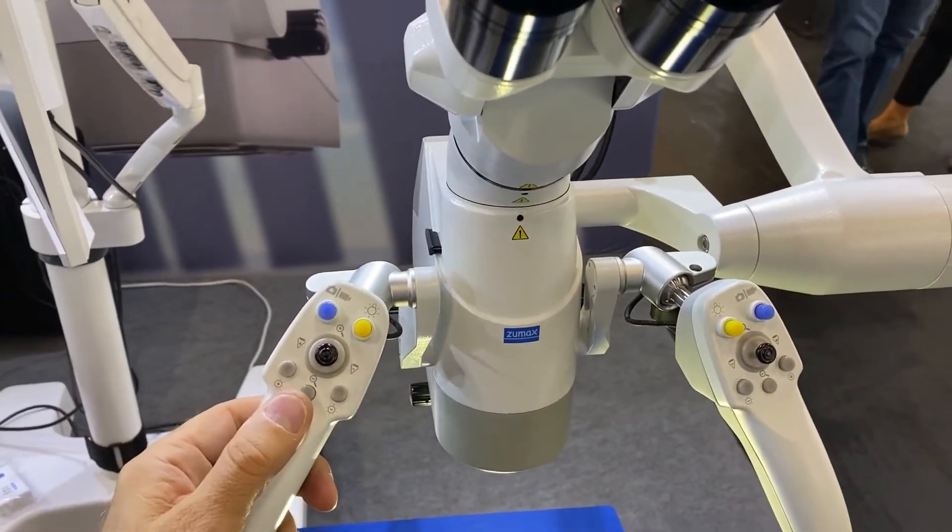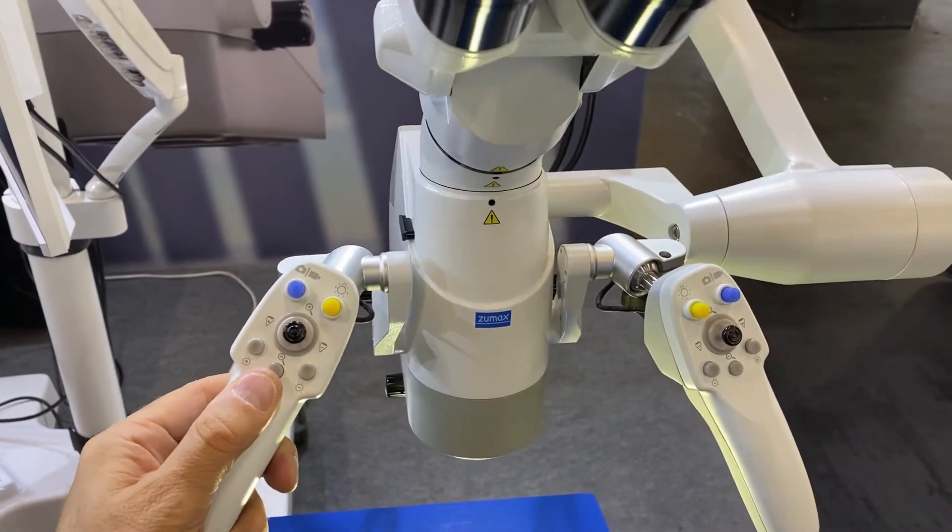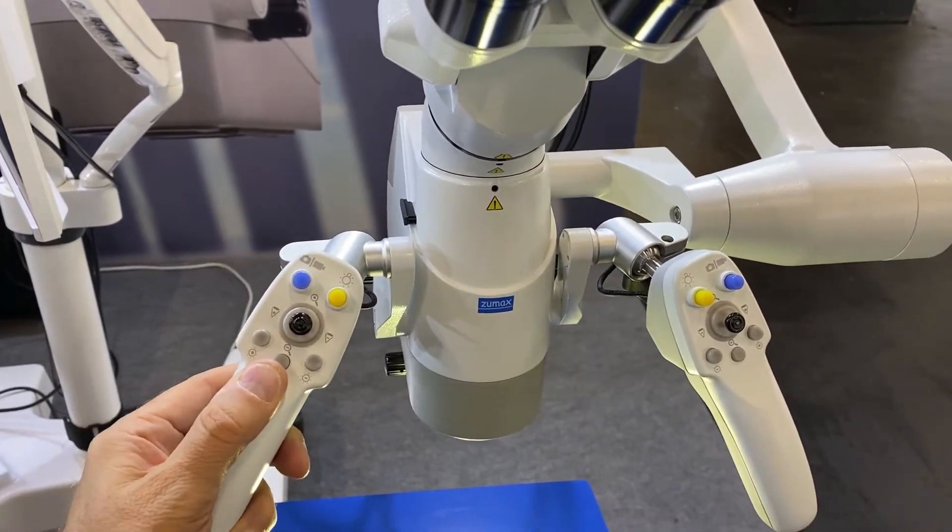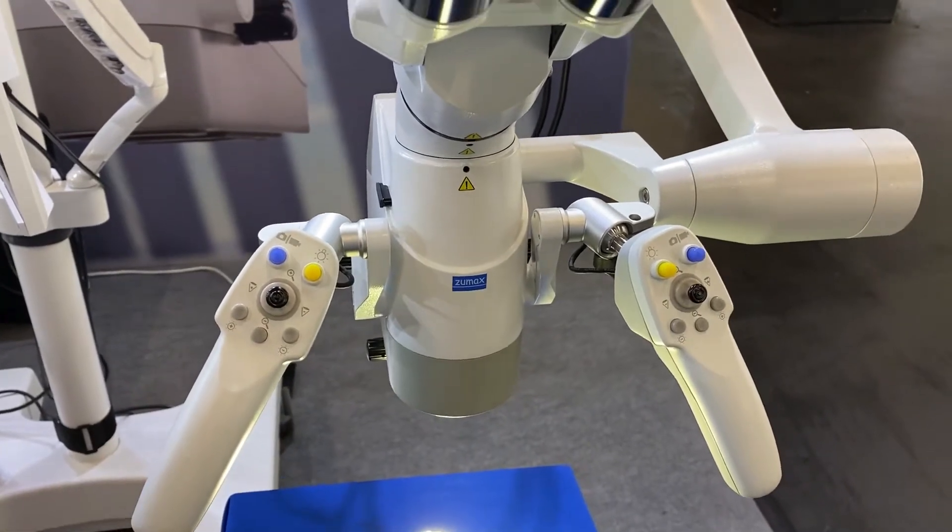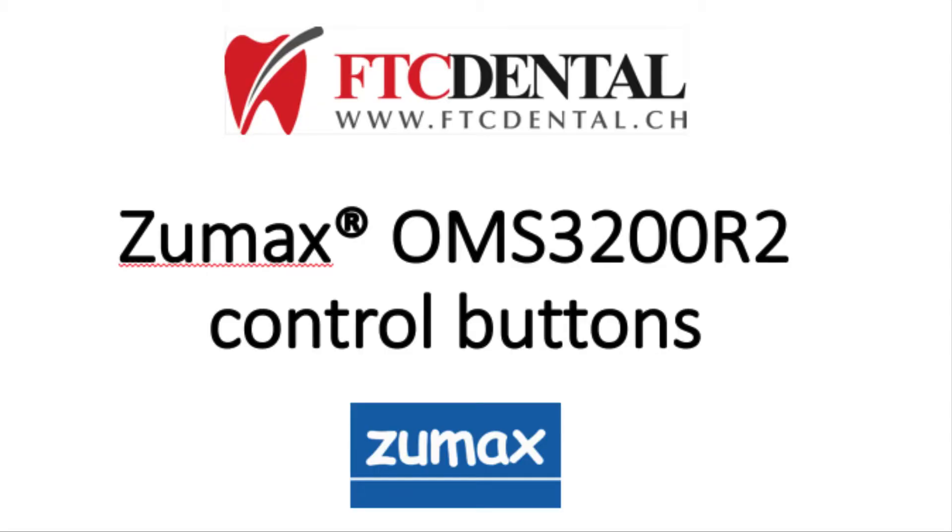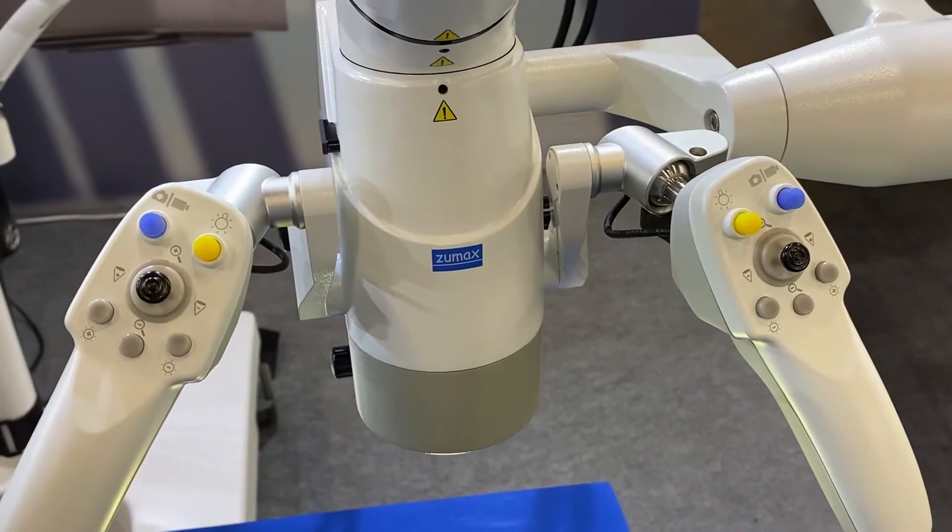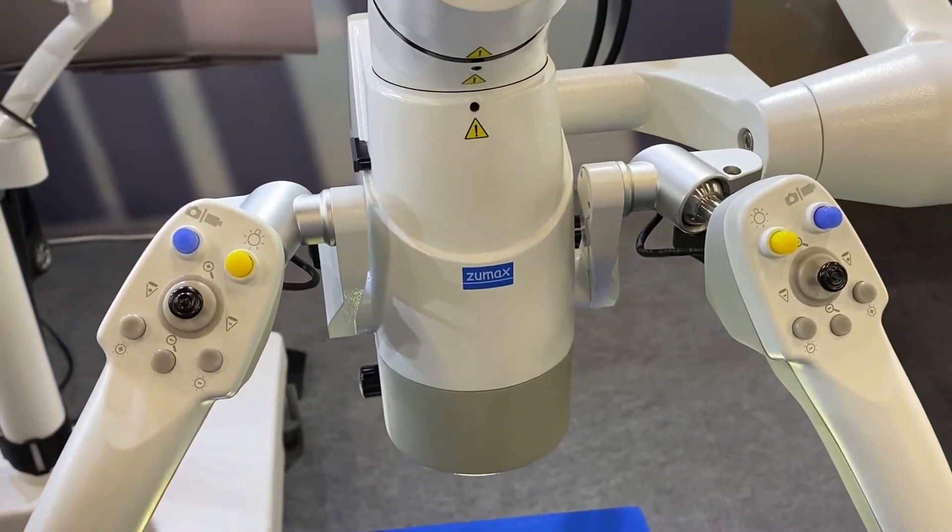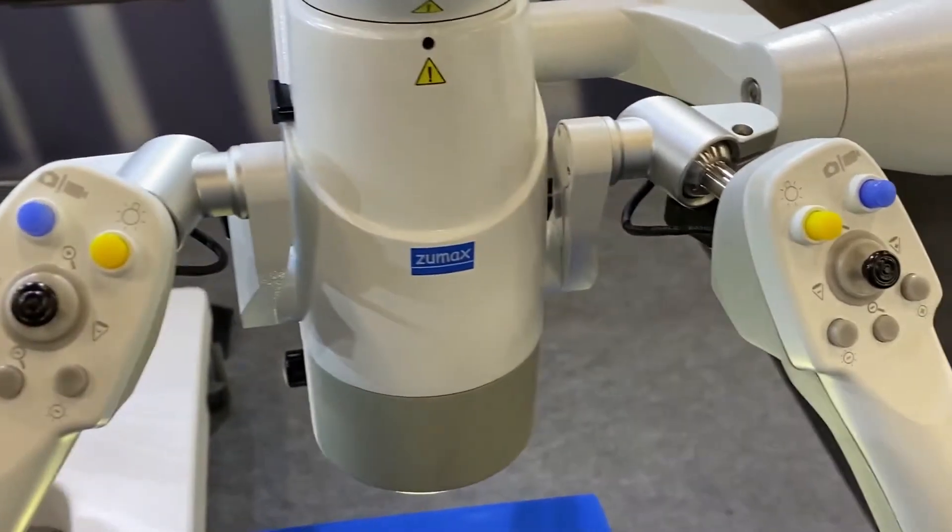You have the brake on the bottom here so you can move this microscope and when you let the button go it will stop and fix. Actually on this OMS3200R2 the buttons of both sides are the same.